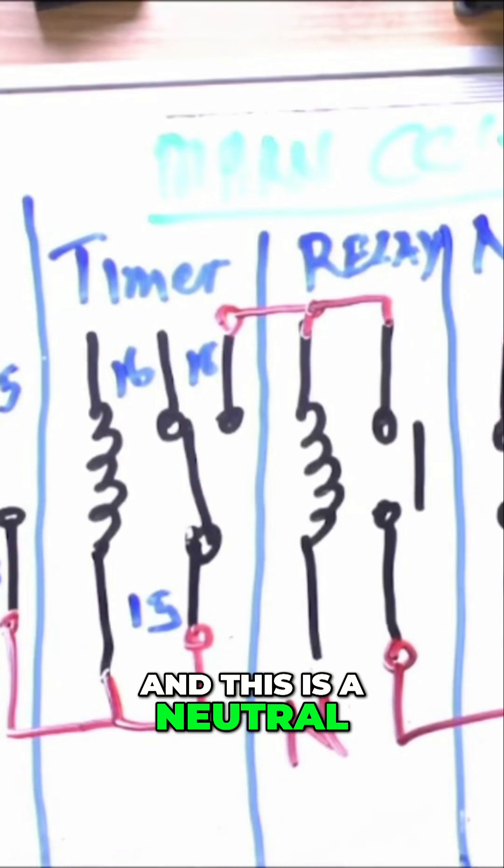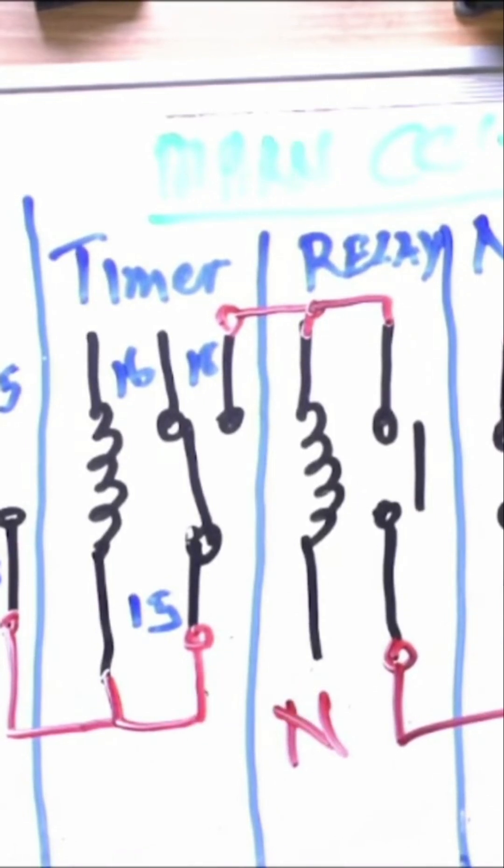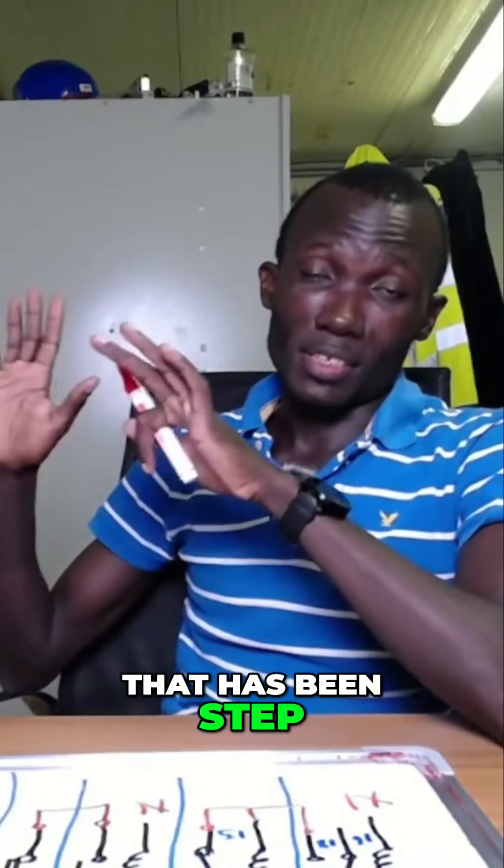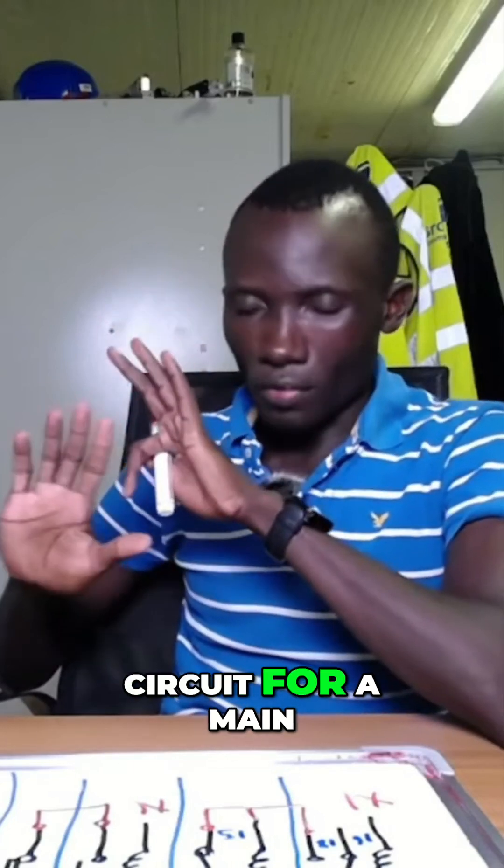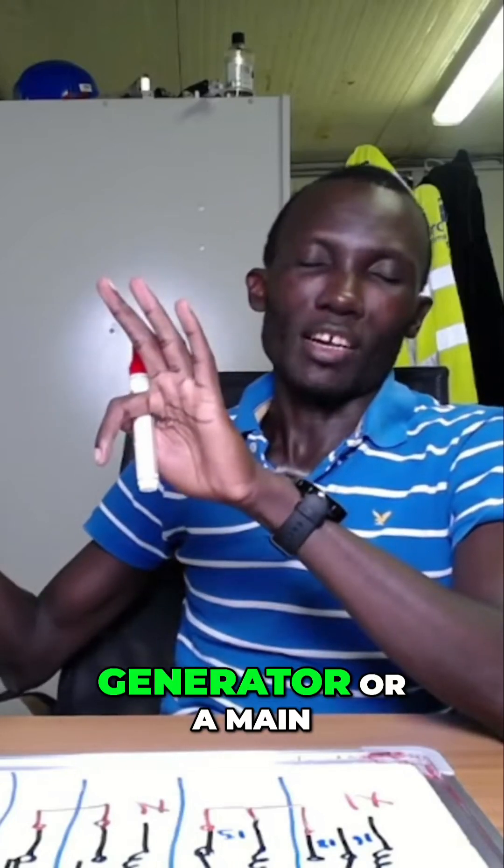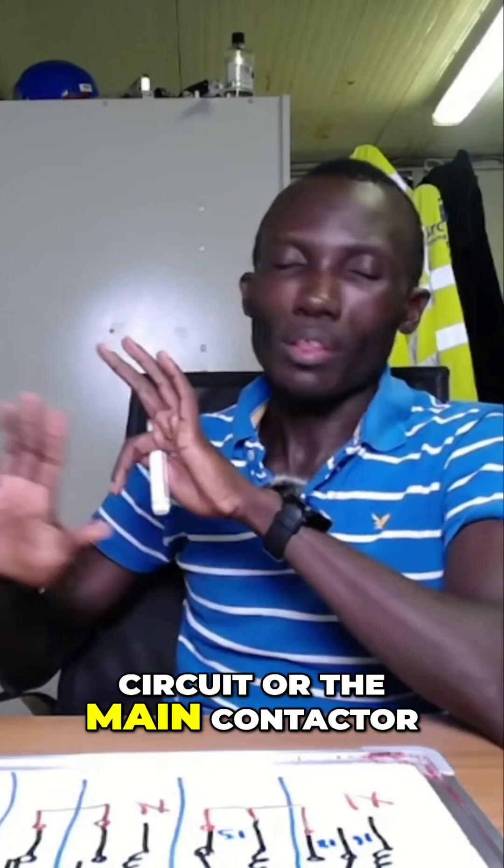That has been step by step. So that's the control circuit for a main generator starter, or main socket, or the main contactor.